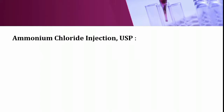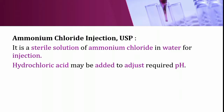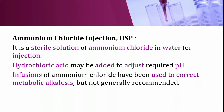Ammonium chloride injection USP is a sterile solution of ammonium chloride in water for injection; hydrochloric acid may be added to adjust the required pH. Infusion of ammonium chloride has been used to correct metabolic alkalosis, but is not generally recommended.